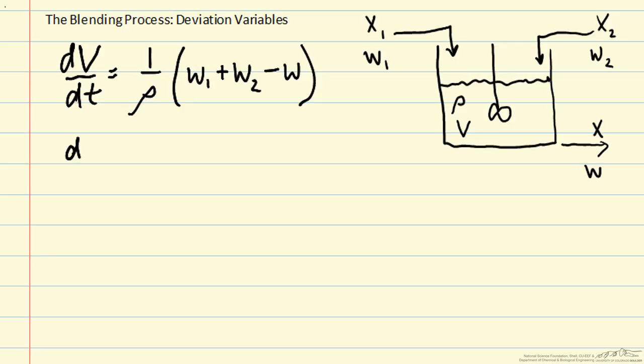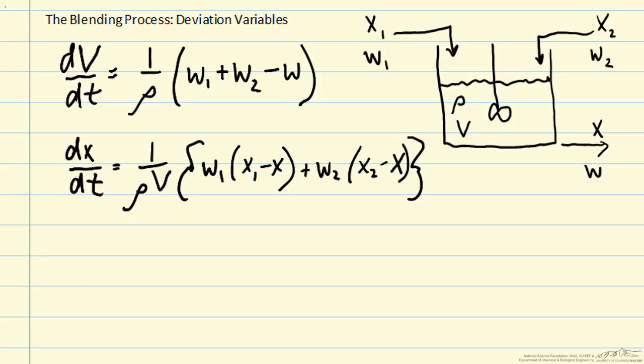Our second dynamic equation is for the mass fraction of A in the exit stream. We have 1 over rho v in the denominator. Then we have w1 times x1 minus x plus w2 times x2 minus x. The first equation is linear, and the second equation is nonlinear, since we have terms like w1 times x1.